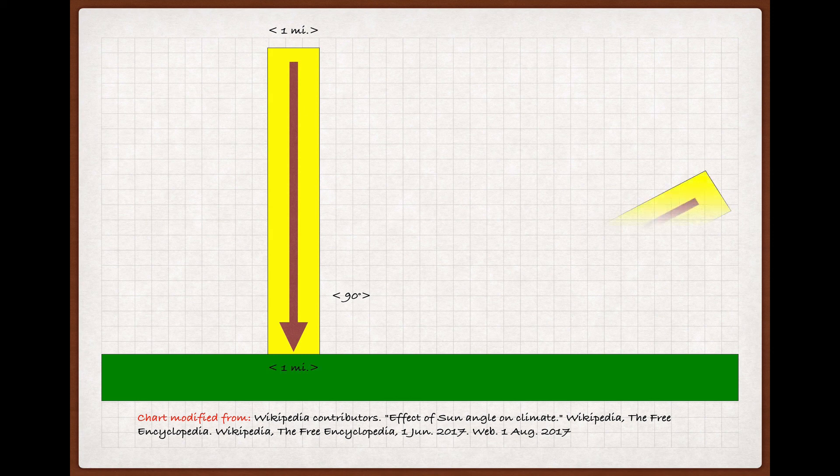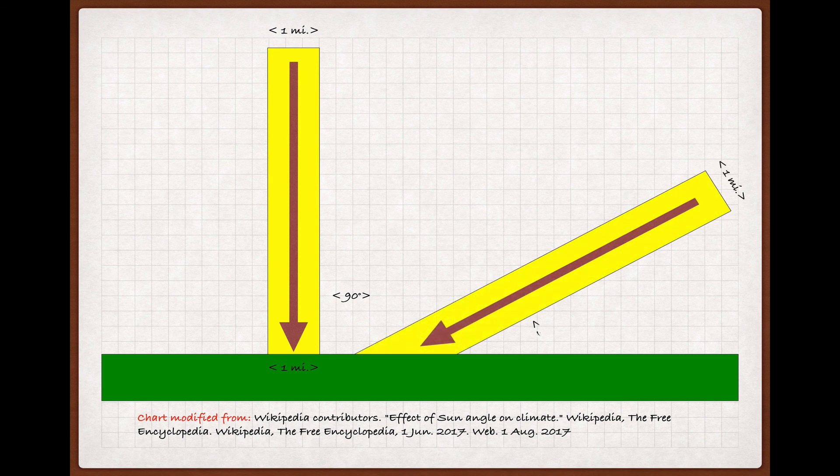But now imagine a second beam of sunlight, also a mile wide, but this time hitting the earth at a 30 degree angle, like it would at a higher latitude north or south. Now, something different happens here. Instead of covering an area one mile wide, the beam ends up covering an area twice as wide at two miles.